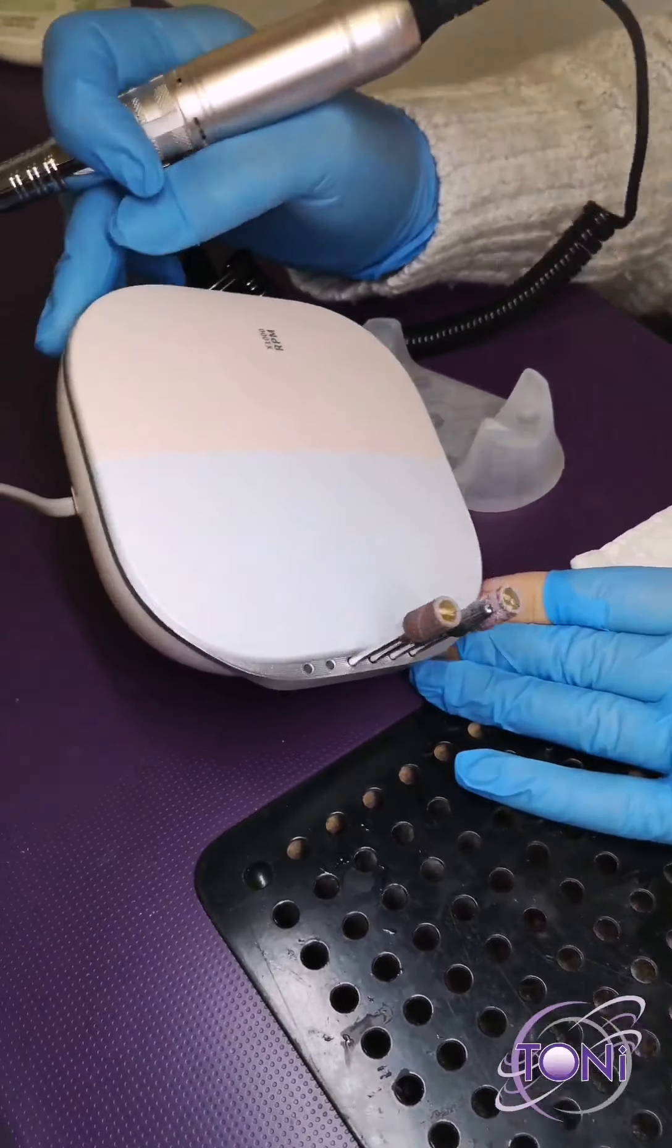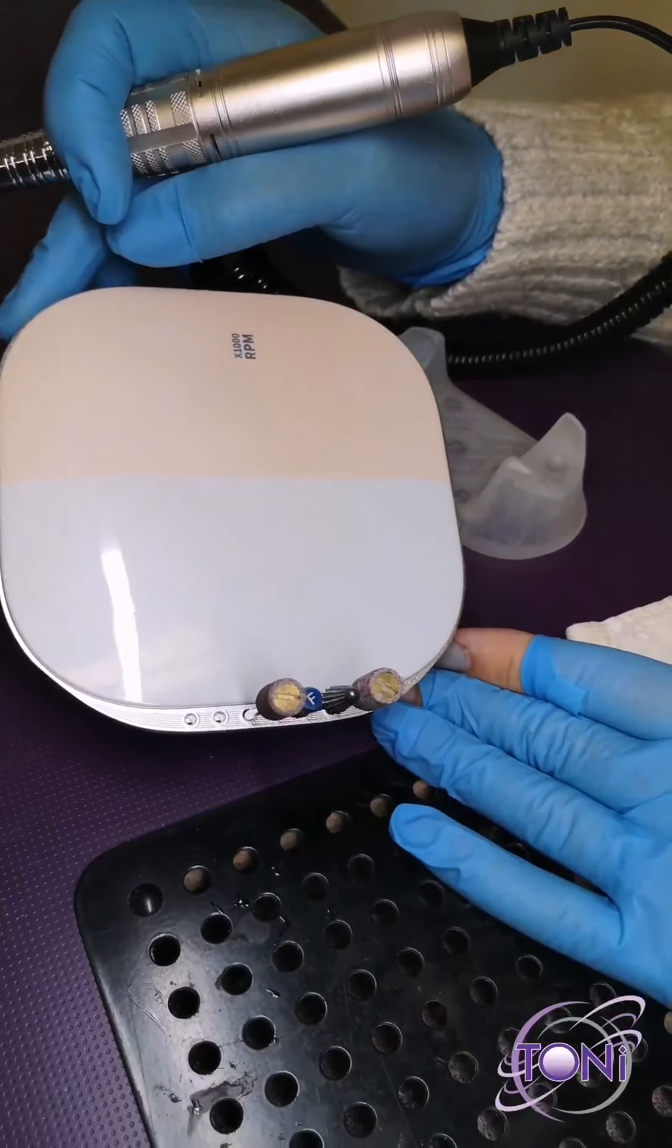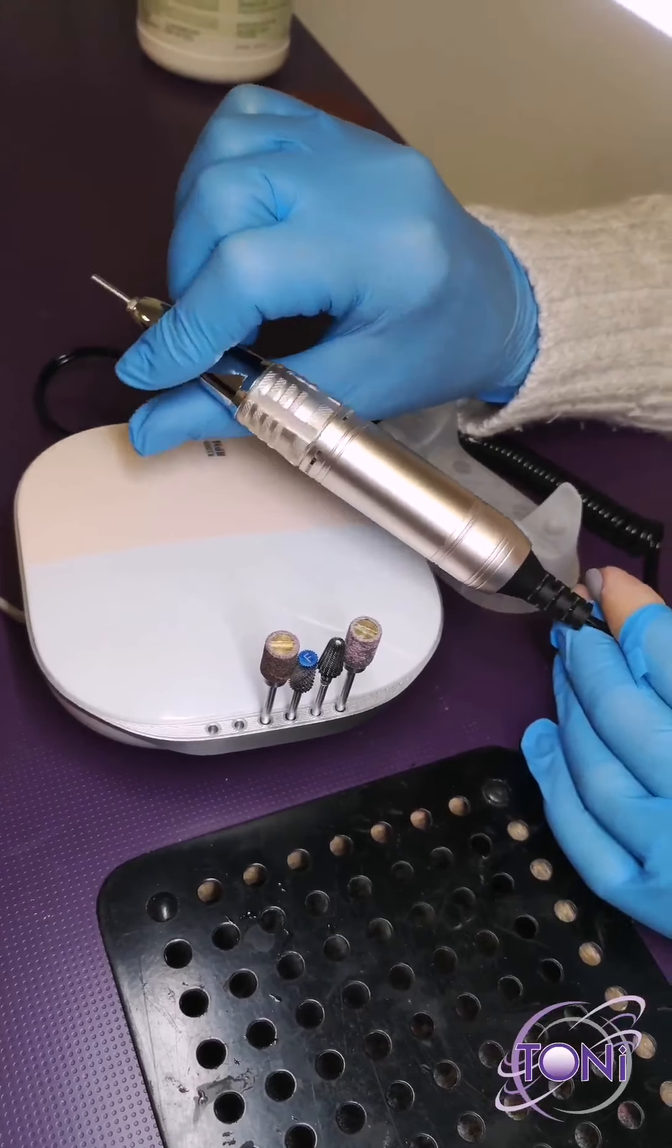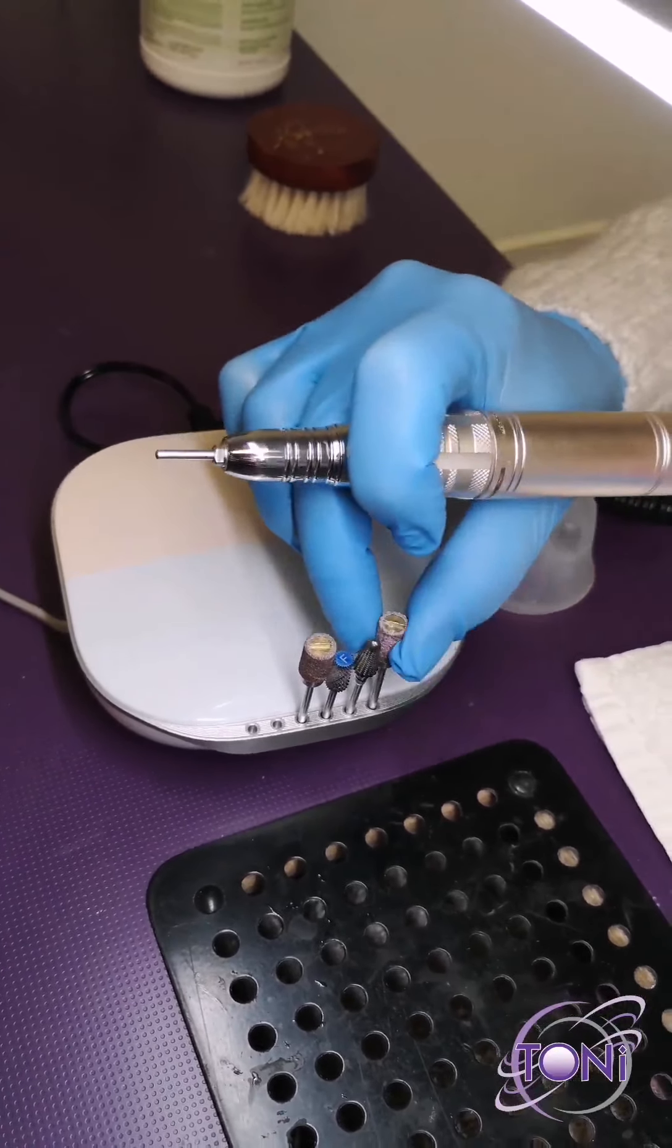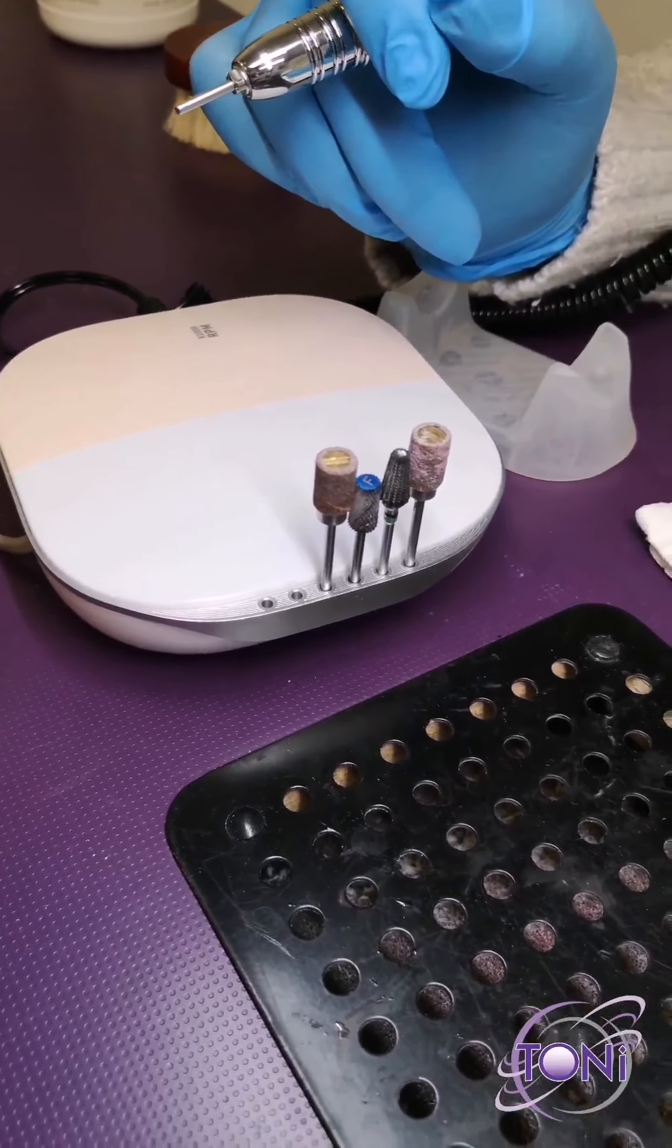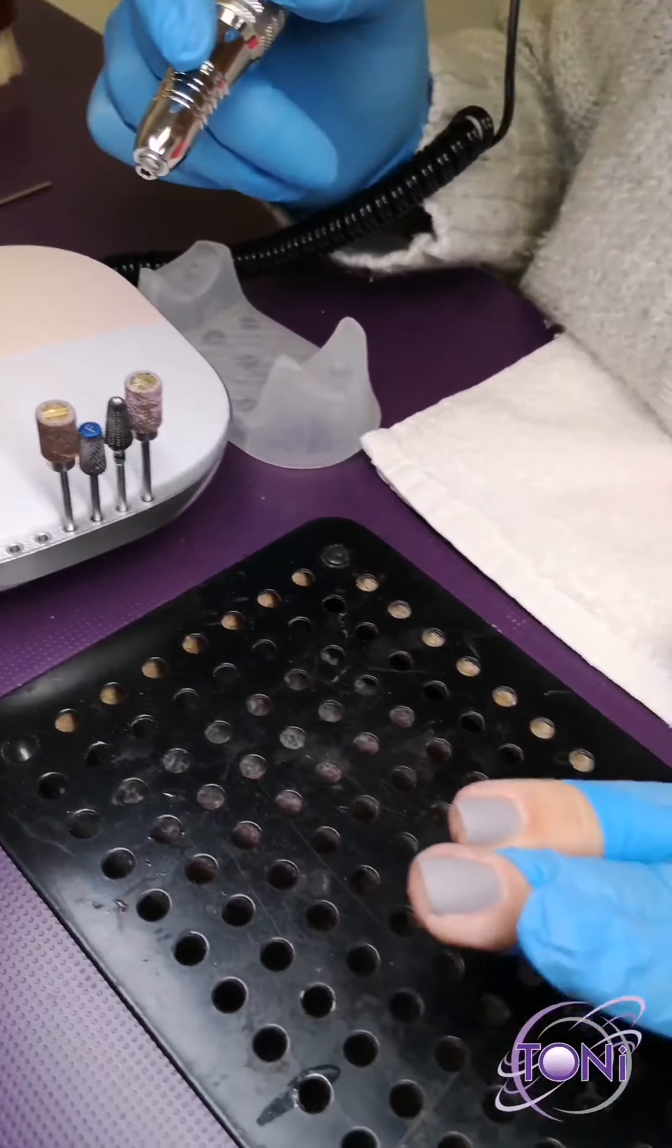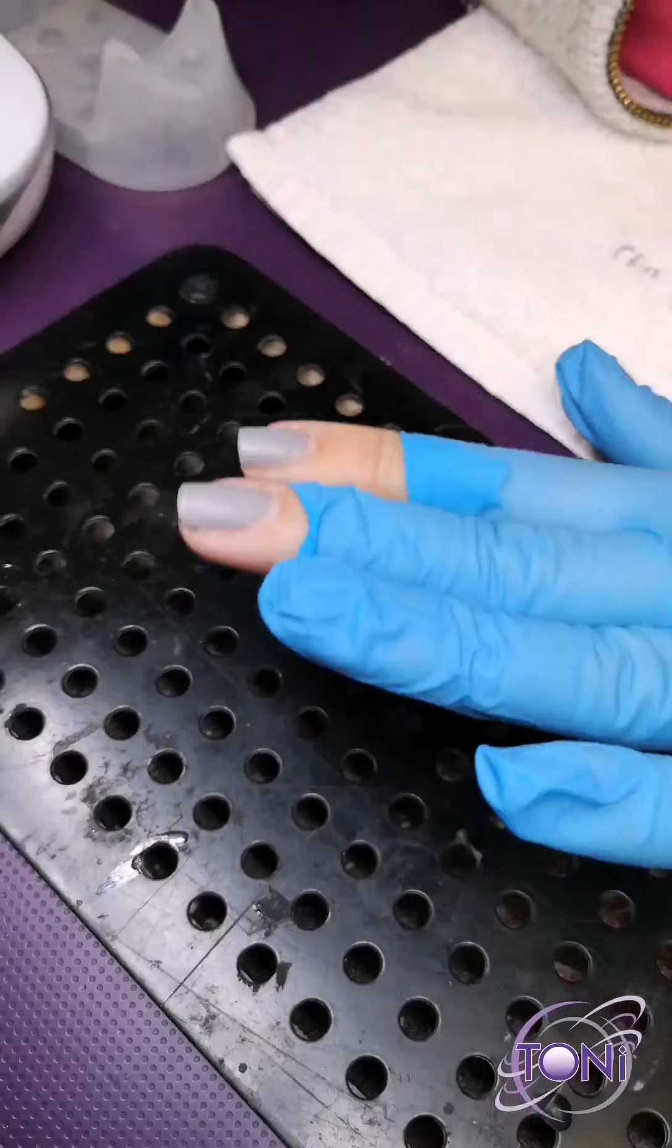I've got a few different things to show you. One of them is our new handy dandy portable e-file here. This is the pink model, so it's got a little bit of a pink chrome look to it. I've got a nice little magnet bit holder here. Let's get started. I've got gel polish on these two fingers with a matte coat and I'm ready for a fill.